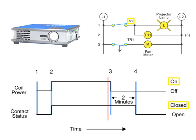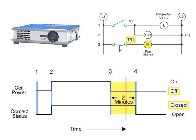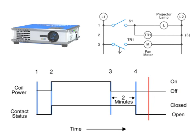When switch S1 is opened, the projector bulb turns off and power is removed from the timer. Contacts TR1 remain closed for a preset period of time and then open, causing the cooling fan to turn off. This off-delay timed open circuit is generally set to adequately cool the projector equipment before it shuts off.